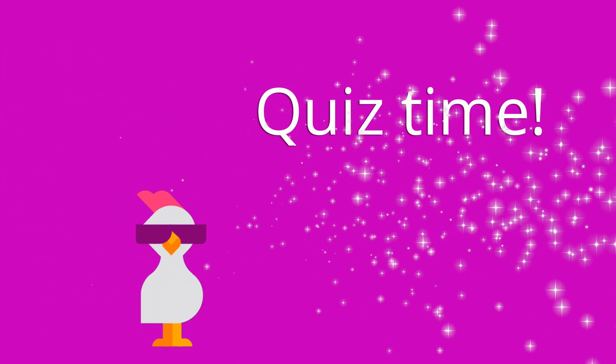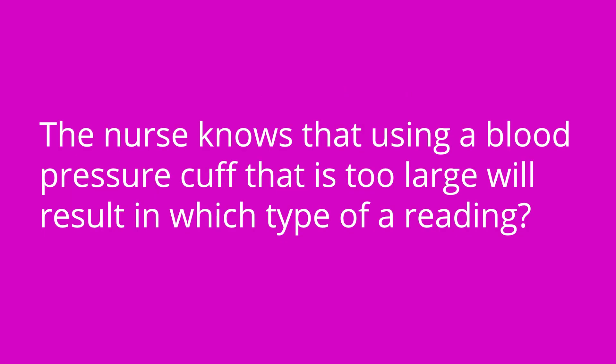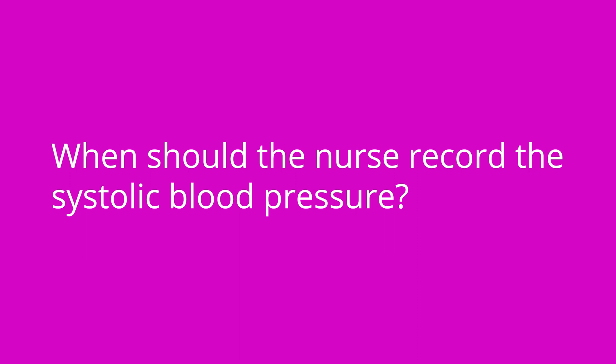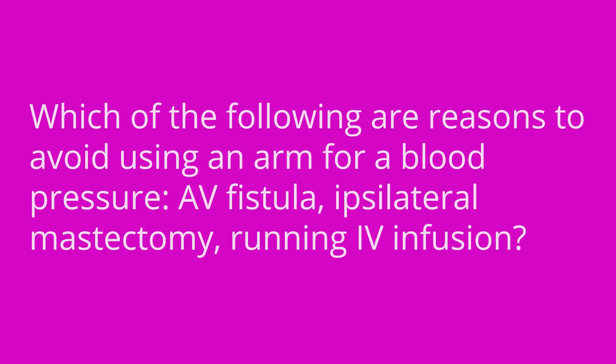Let's test your knowledge with some quiz questions. The nurse knows that using a blood pressure cuff that is too large will result in which type of reading? — A falsely low reading. When should the nurse record the systolic blood pressure? — Upon hearing the first sound. Which of the following are reasons to avoid using an arm: presence of an AV fistula, ipsilateral mastectomy, or a running IV infusion? — All of these are reasons to avoid using a specific arm.